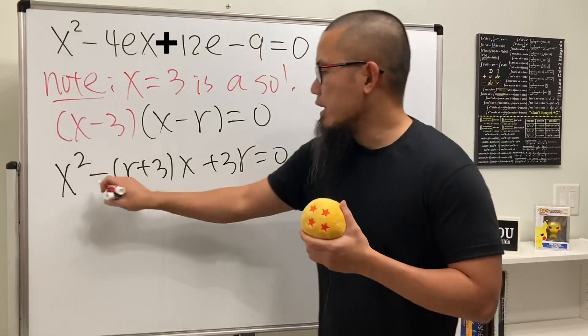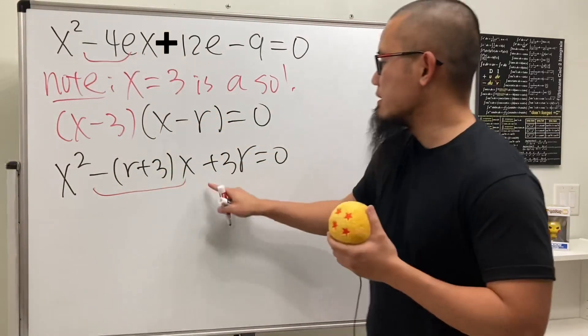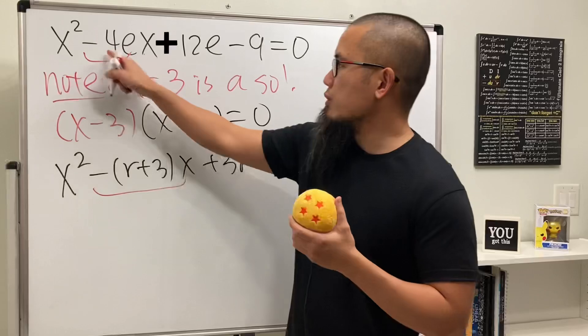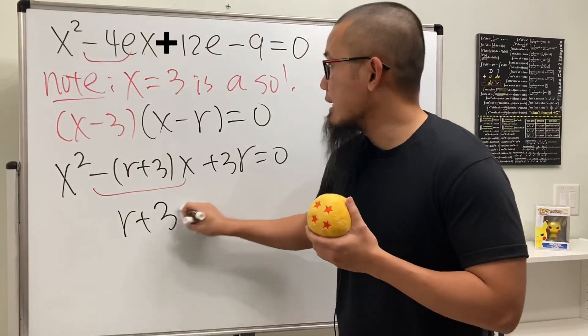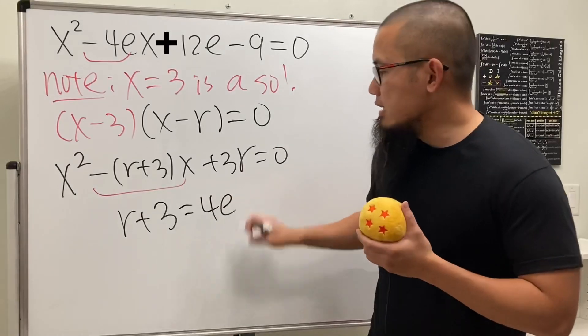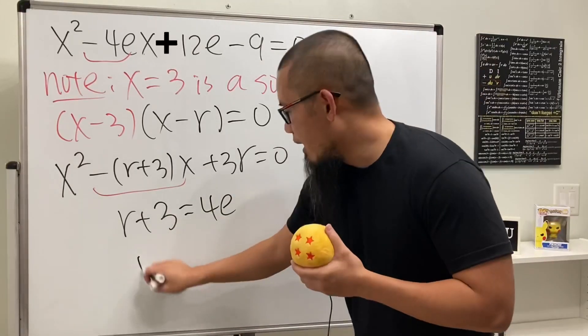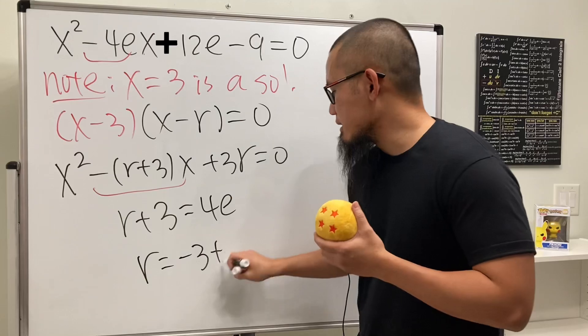And now it depends on your preference. You can set this to be that or you can set this to be this. Let's do this. It's equal to that. Negative match already. So this means r plus 3 has to be equal to 4e. And then this means we can just move the 3 to the other side. r is equal to negative 3 plus 4e.